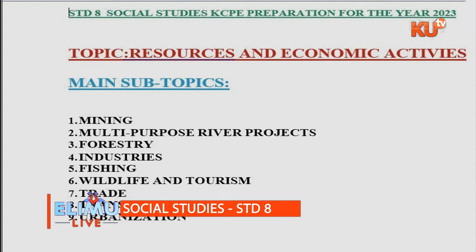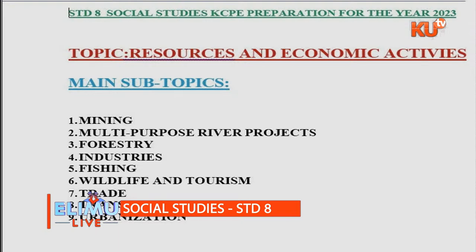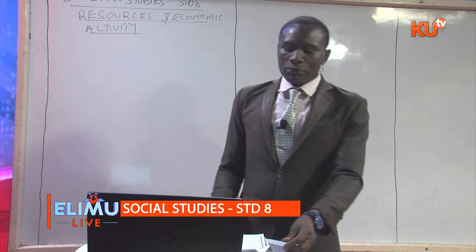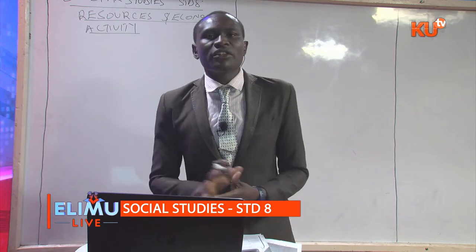In today's lesson, we're going to cover the following subtopics: one, mining; two, multipurpose river projects; three, forestry; four, industry; fishing; wildlife and tourism; trade; transport; and lastly, urbanization. Those are the nine subtopics that are most commonly examined in KCPE.